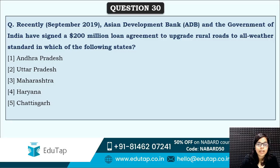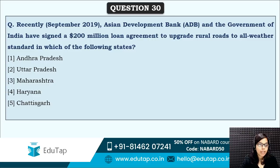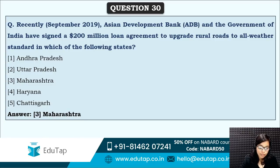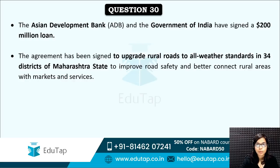Next: the Asian Development Bank and the Government of India have signed a 200 million dollar loan agreement to upgrade rural roads to all-weather standards in which of the following states? ADB and the Government of India are going to upgrade rural roads of which state? You need to remember the contributions of ADB, AIIB, and World Bank. The correct answer is option three — Maharashtra. ADB is providing 200 million dollars so that Maharashtra's rural roads can be upgraded.